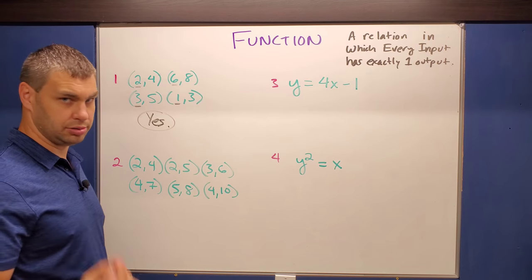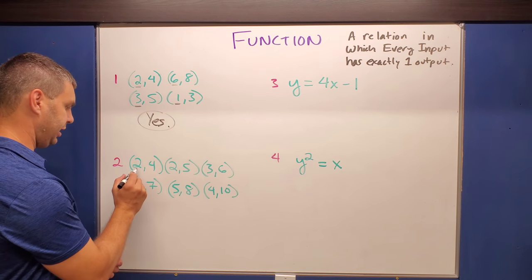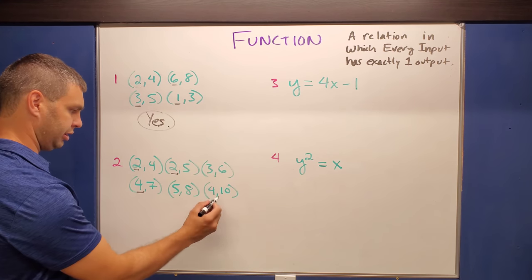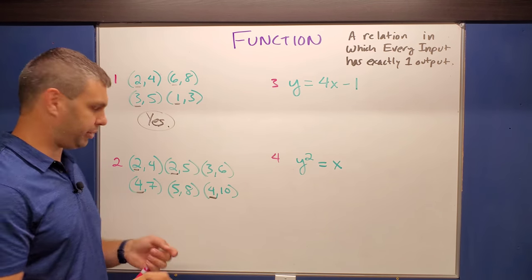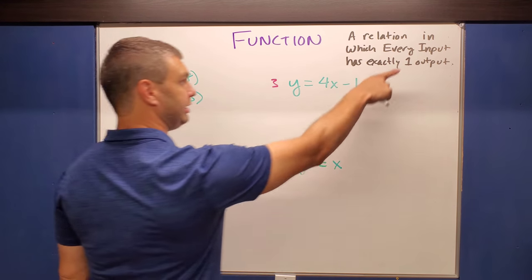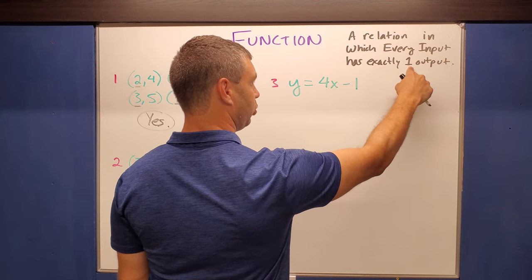What about number two? Number two, we're looking again for the same input. So here I have a couple of twos. Here's a 4 and another 4. Now look at their outputs. This is (2,4) and (2,5).